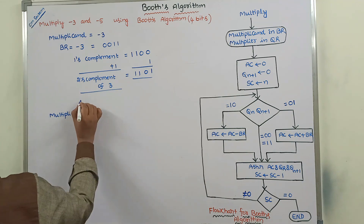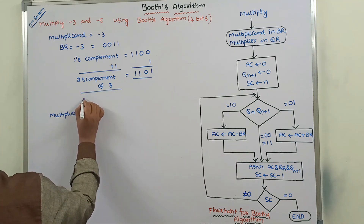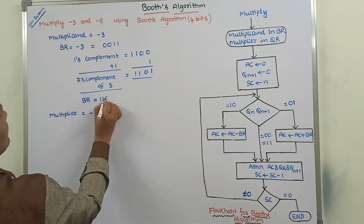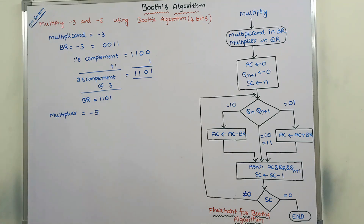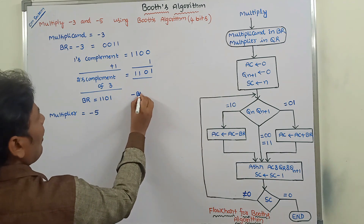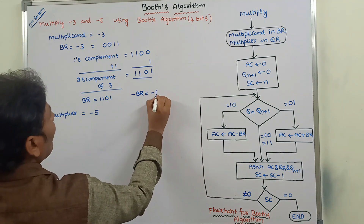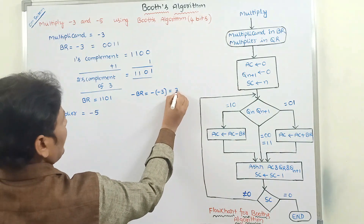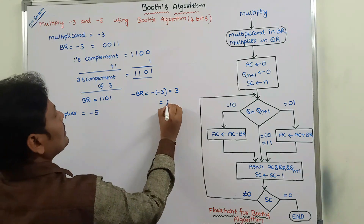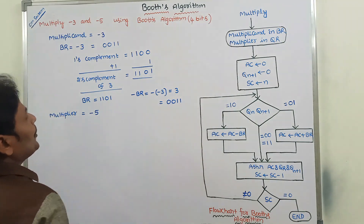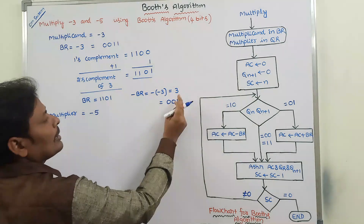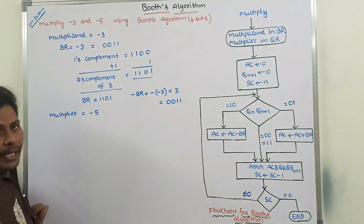Therefore, BR is equal to 1, 1, 0, 1. What is the minus BR value? Minus BR is nothing but minus of minus 3, which is 3. The binary form of 3 in 4 bits we already know is 0, 0, 1, 1. So BR value is 1101 and minus BR value is 0011.